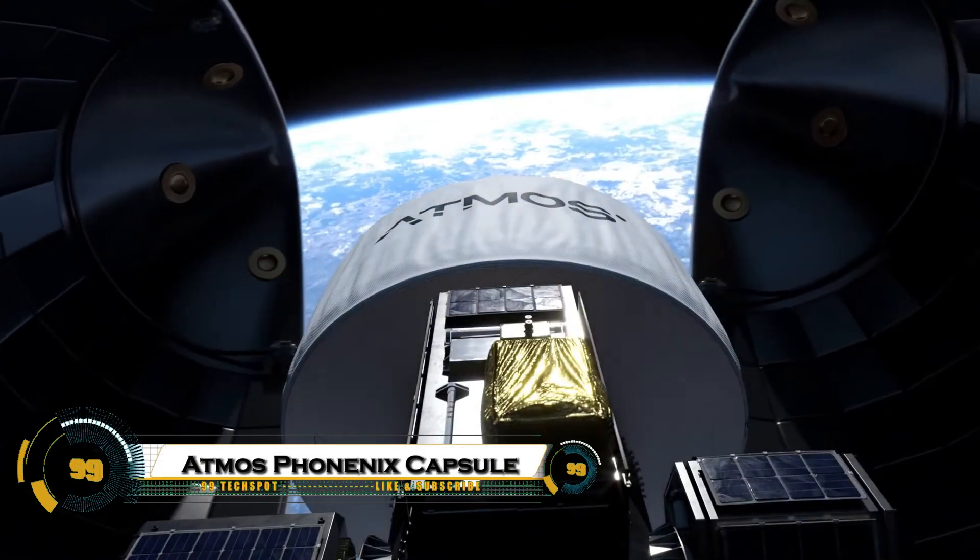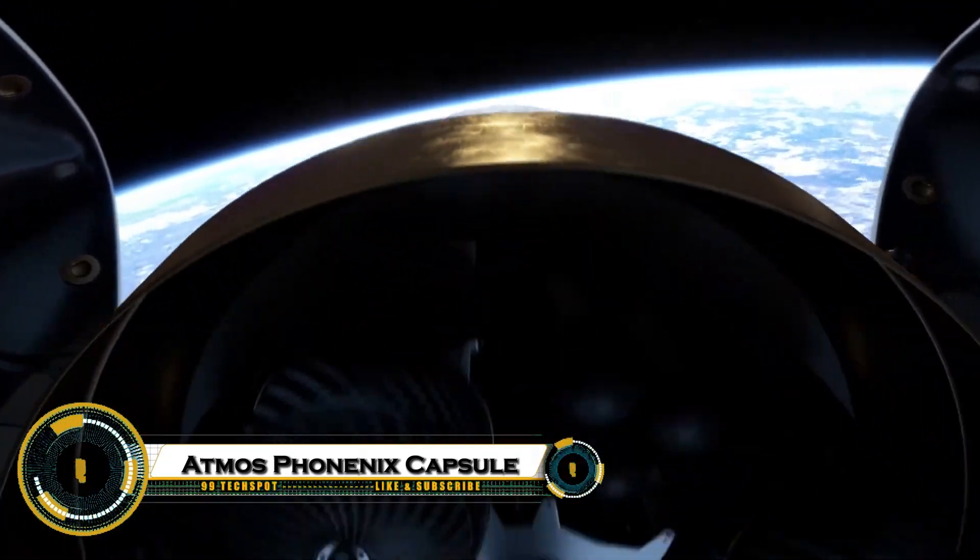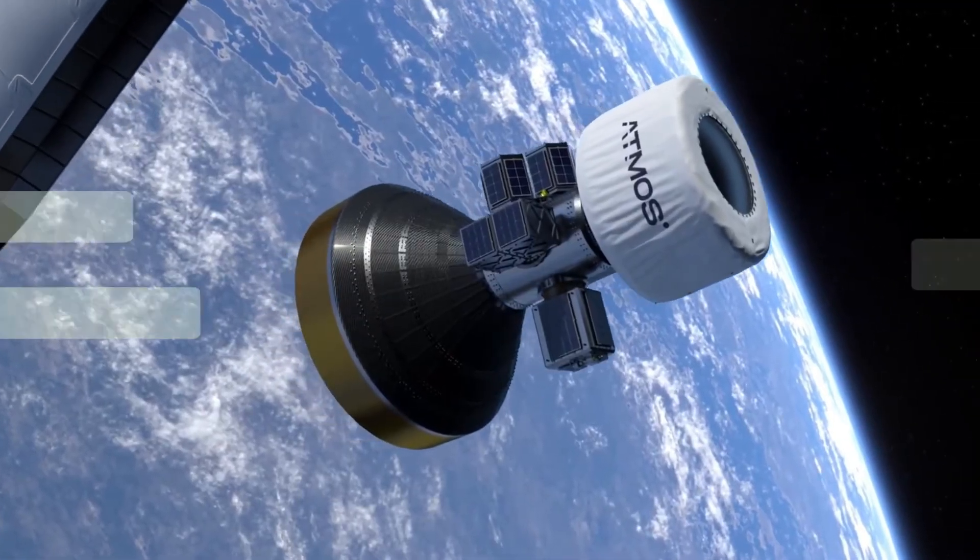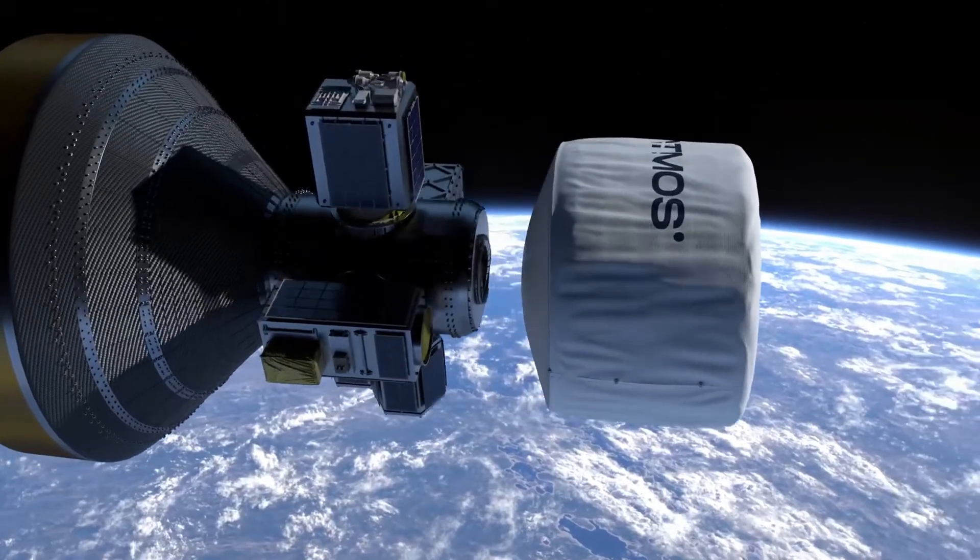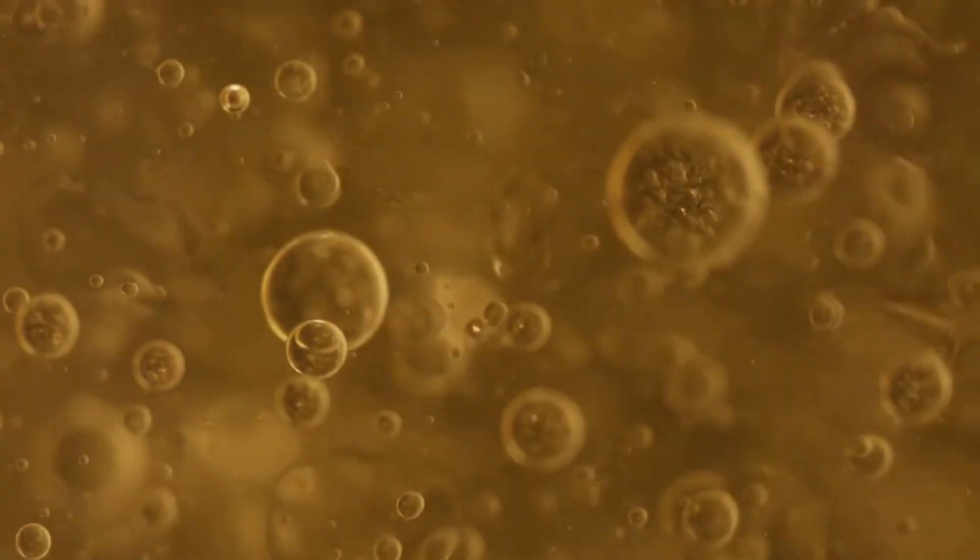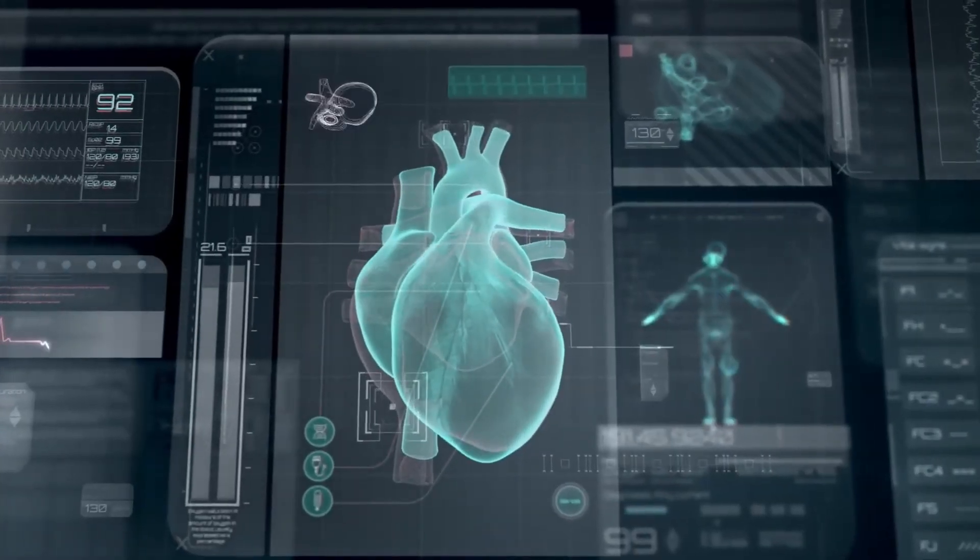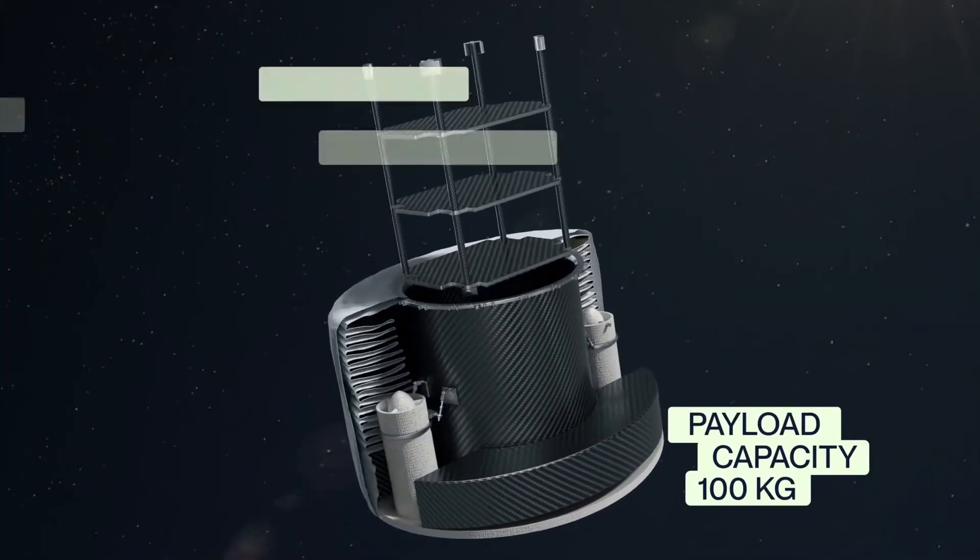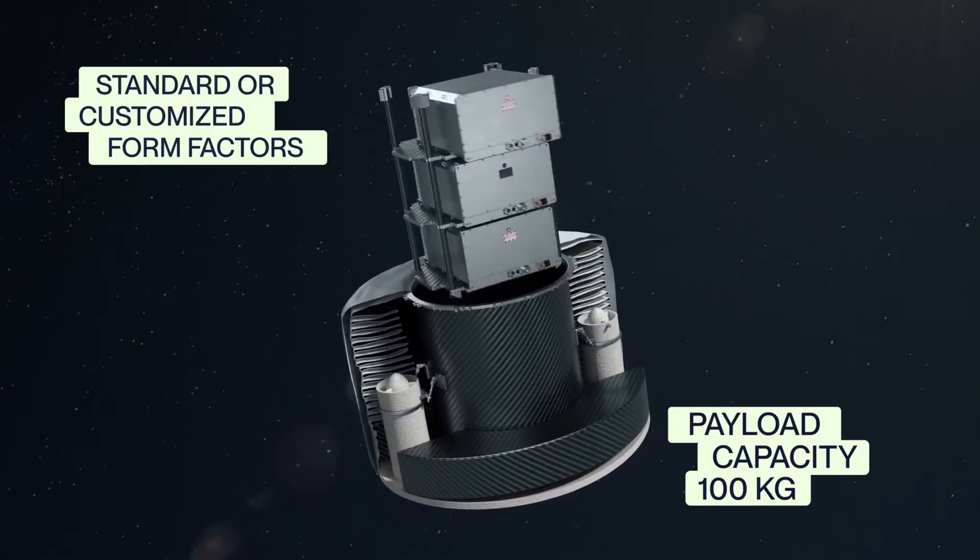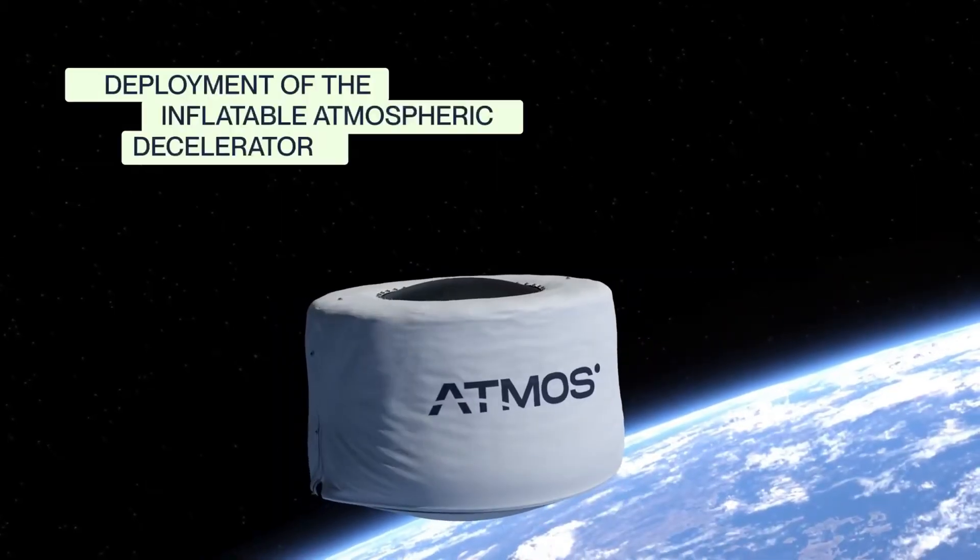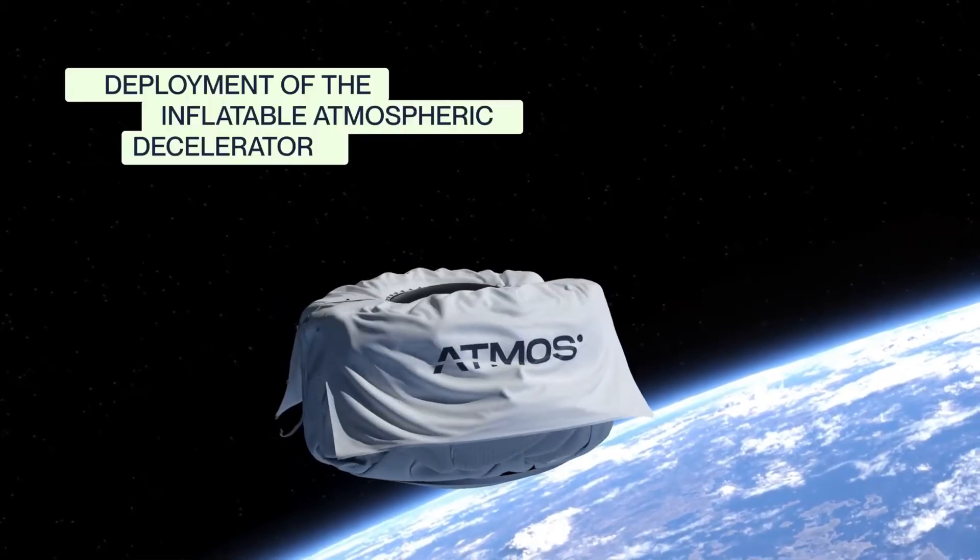Atmos Phoenix is a groundbreaking German reentry capsule that completed its first orbital test in April 2025, becoming Europe's fastest-moving private company to launch a functioning cargo return system. The capsule uses revolutionary inflatable heat shield technology, acting as both thermal protection and high-velocity parachute, safely returning up to 100 kilograms of cargo from orbit, perfect for space-grown pharmaceuticals and biological experiments.